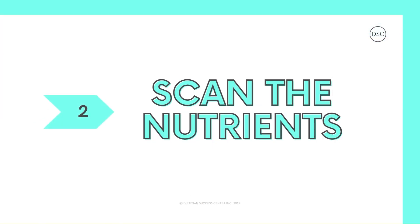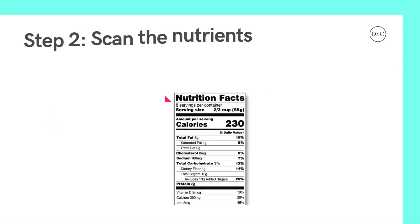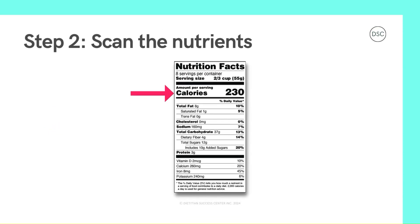This brings us to step two, which is to scan the nutrients found in the table. As we move down the table, you're going to see calories listed next. Calories act like fuel for your body, similar to how gasoline acts as fuel for a car. So this value tells you how much fuel you get from one serving of this product.